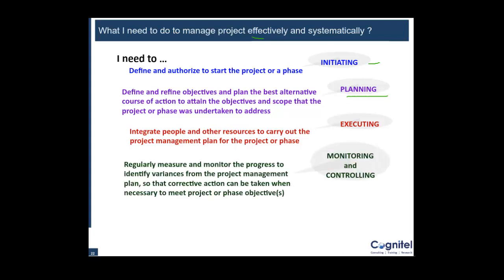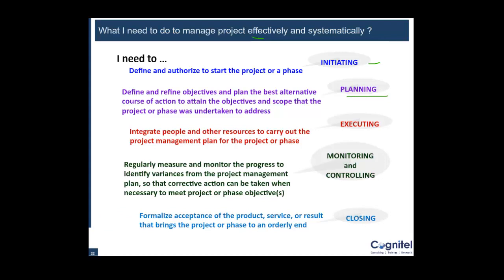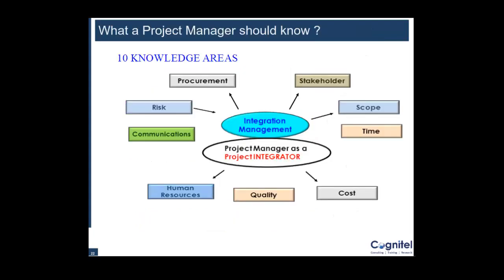Of course, monitoring and controlling of the progress on the project would help you to identify any issues, any variances, or any corrective actions you might need to take in order to bring the project back on track — that's done by Monitoring and Controlling. And finally, you need to get formal acceptance of the output of your project in order to successfully close the project, which is done by Closing.